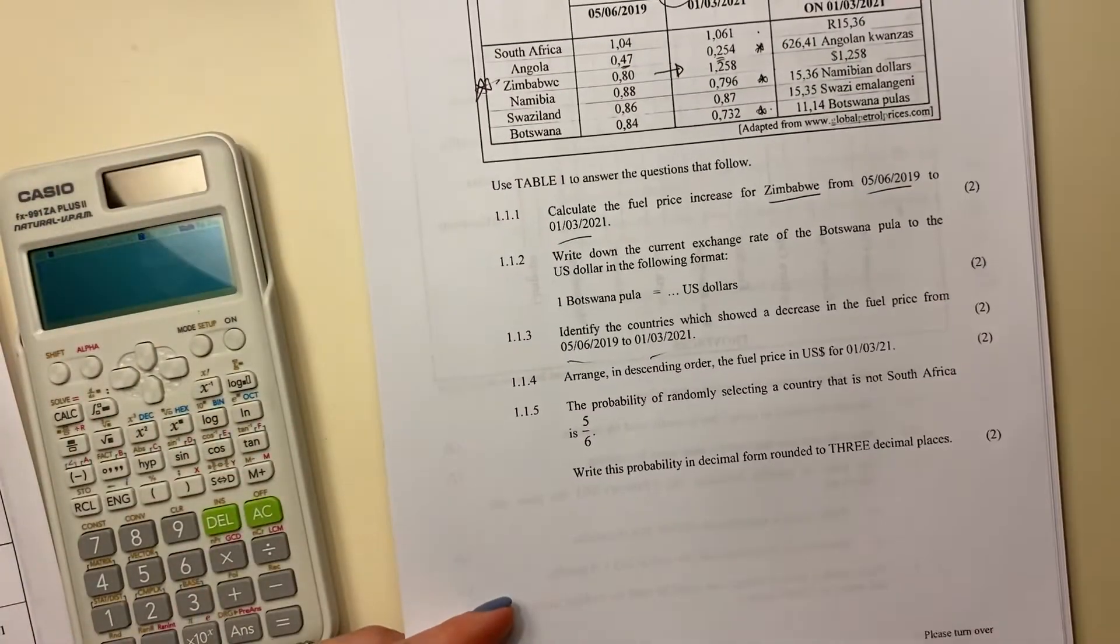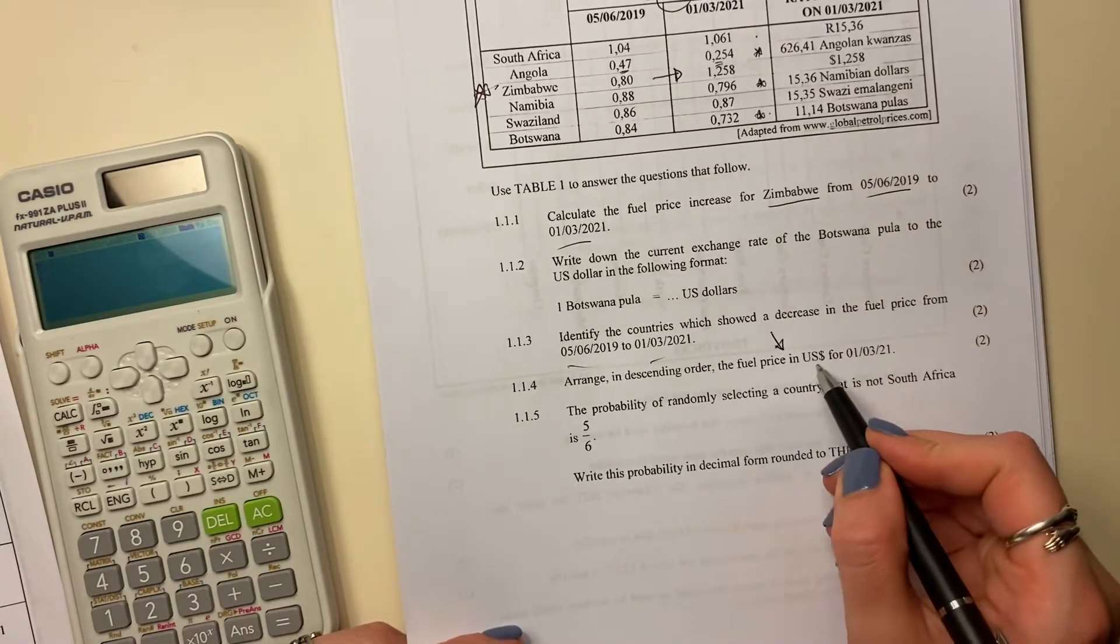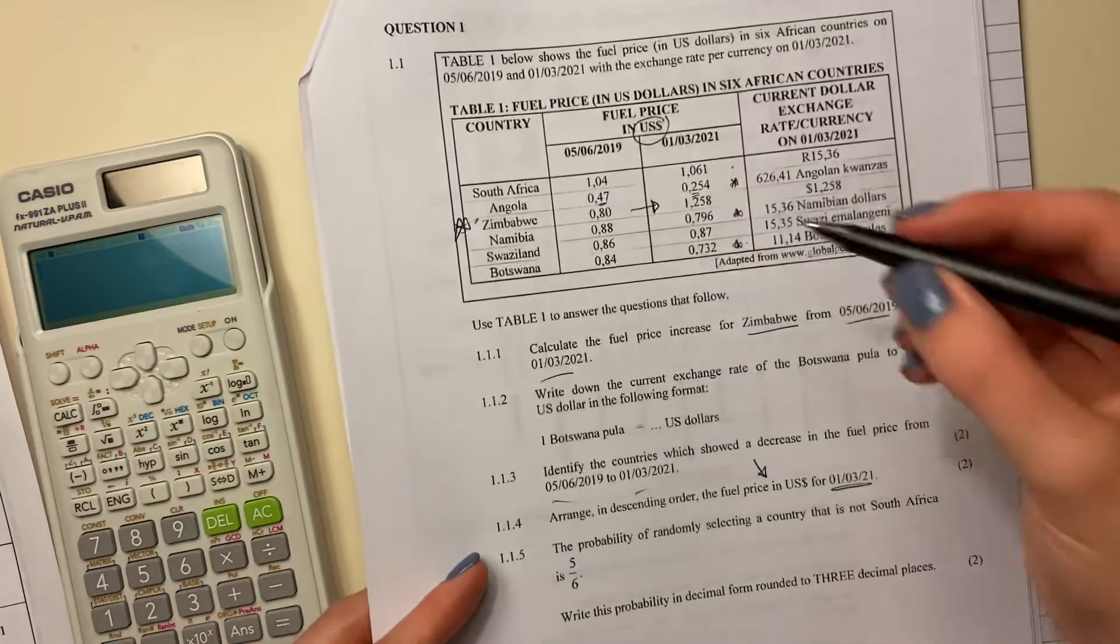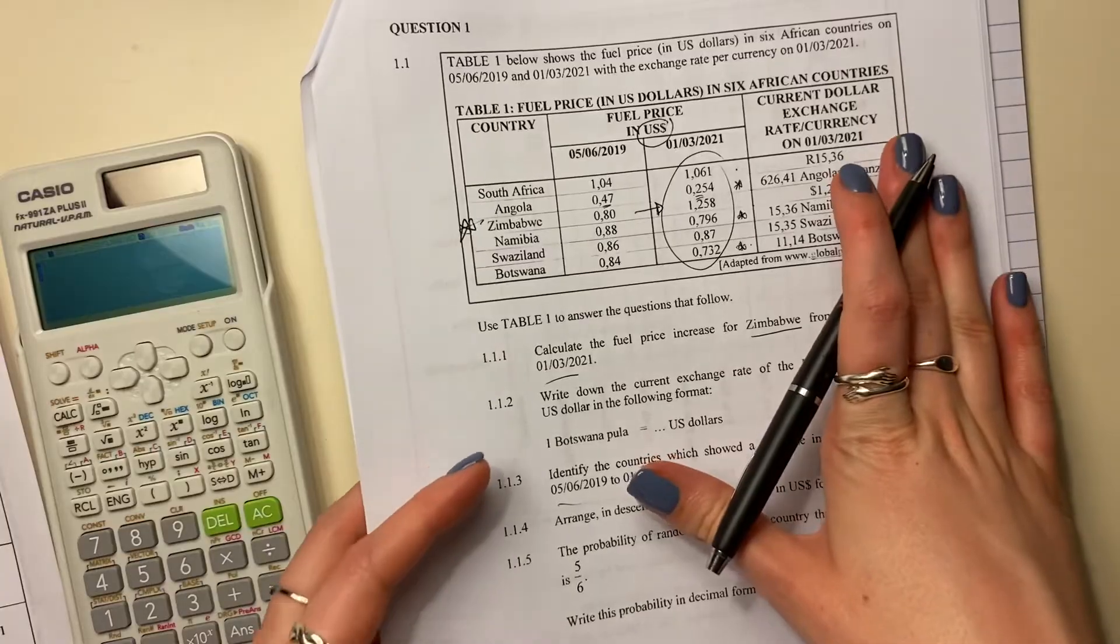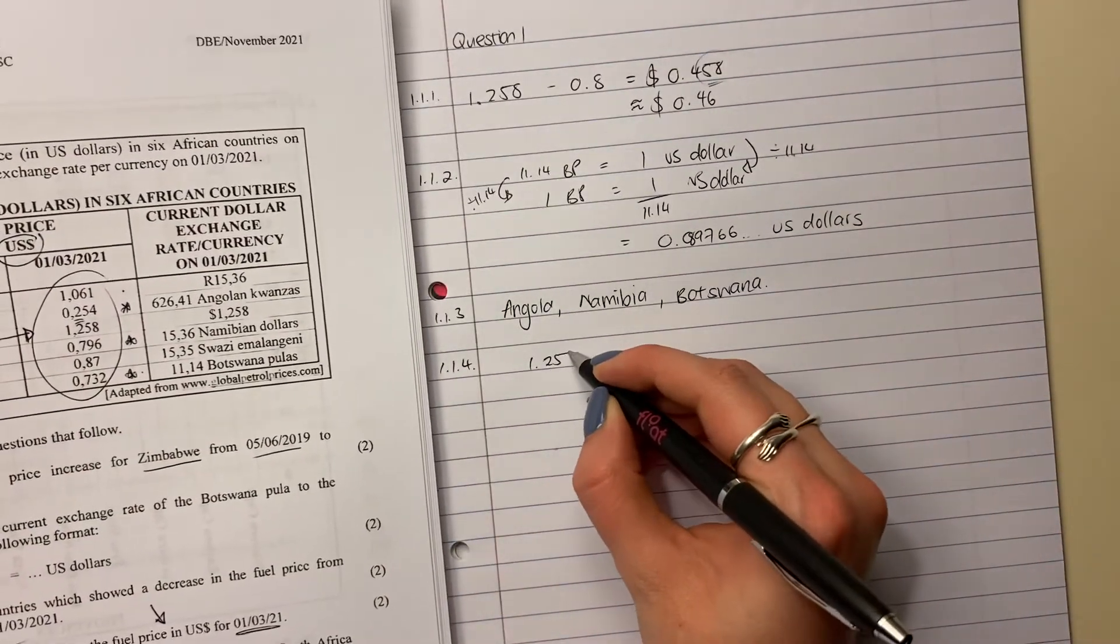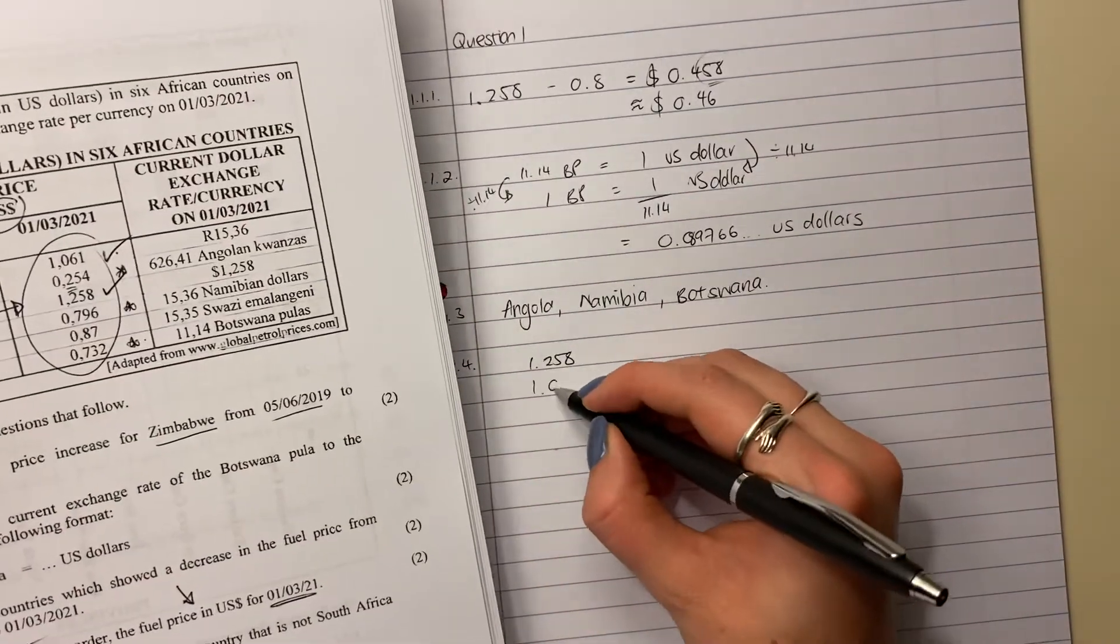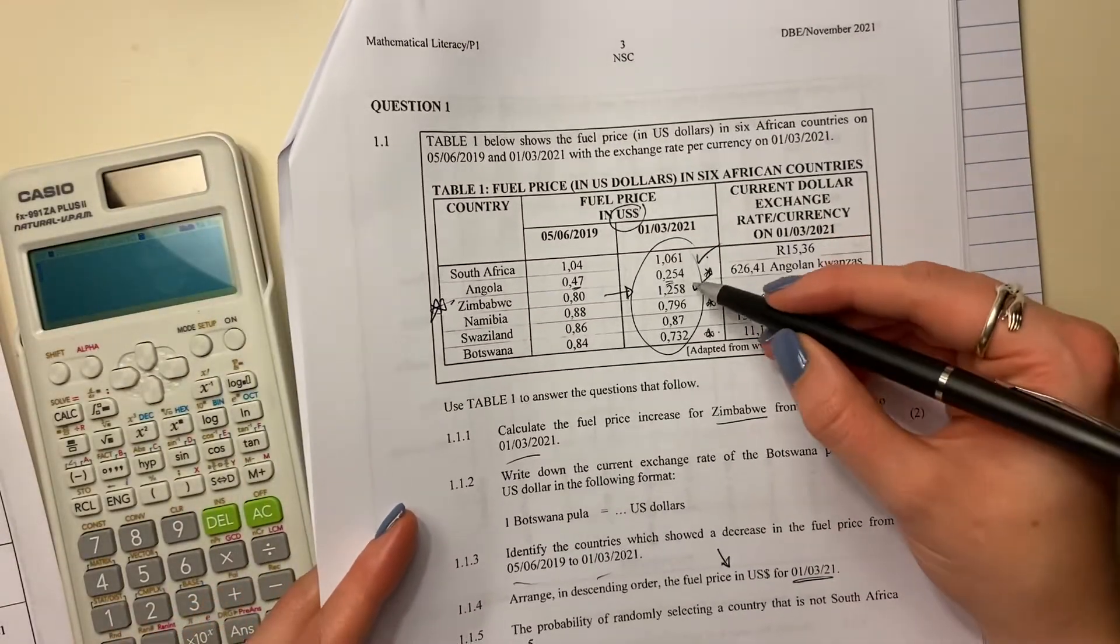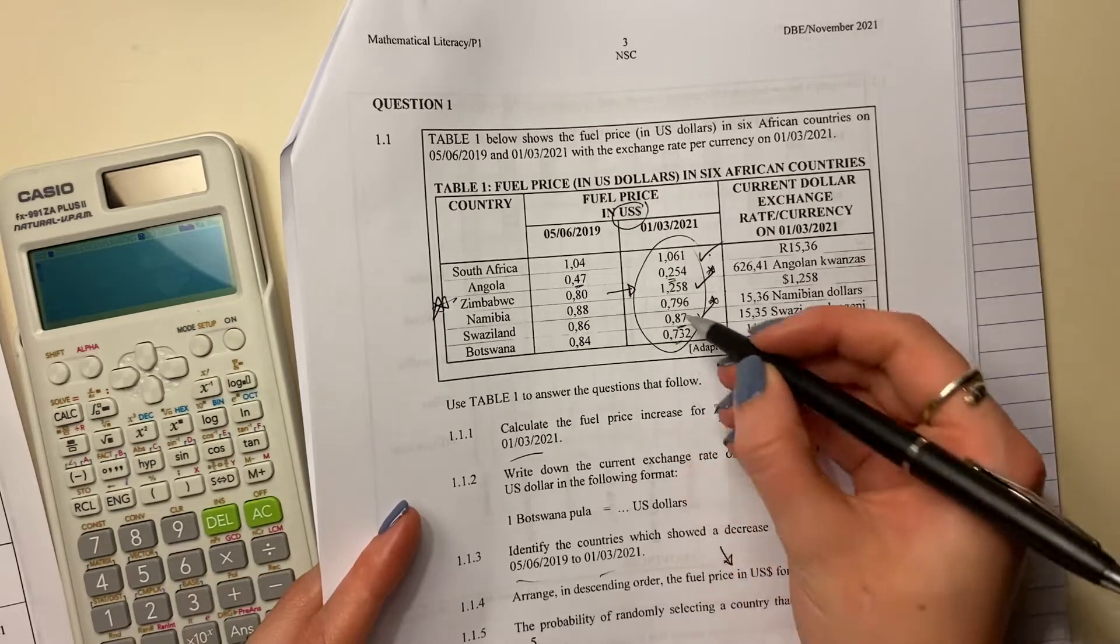Then it says, arrange in descending order. Remember, descending means going down the fuel price in US dollars for the state. So we're going to look here and this is descending order. Remember, descending means you start from the largest and you go down to the lowest. So what's the largest there? 1.258. That's my largest. Which one comes next? That one. 1.061. What comes after that? Let's look. It should be 87. Remember, you're comparing the first two decimals.